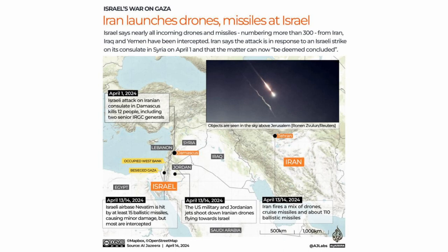The attack was the anticipated response from Tehran to a strike at the start of the month on the Iranian consulate in Damascus, the Syrian capital. Israel did not claim responsibility for the attack, but Iran blamed them anyway.